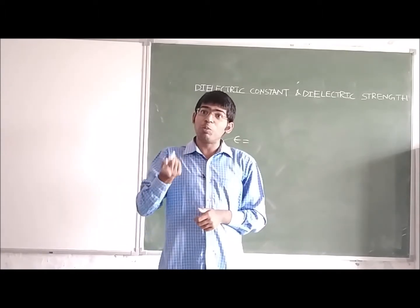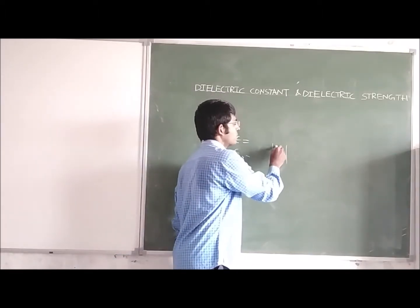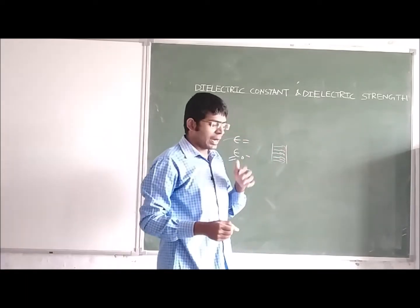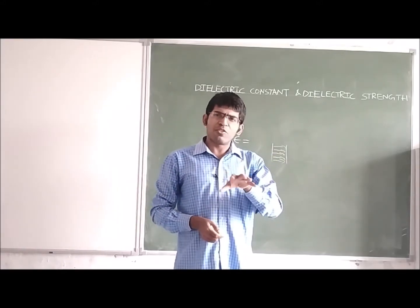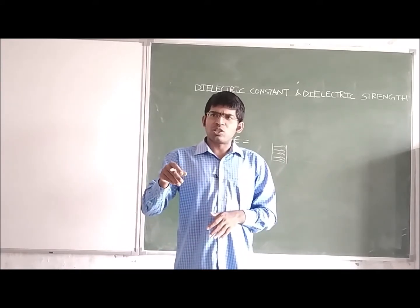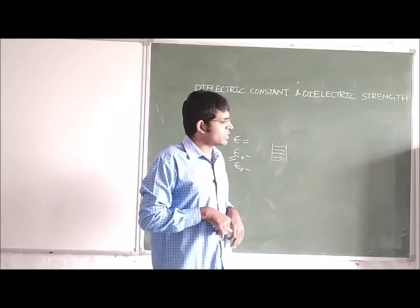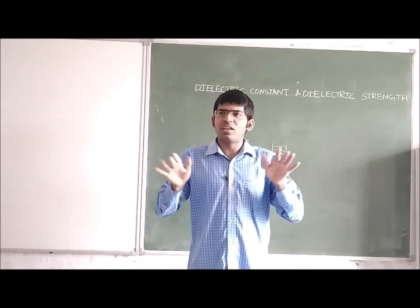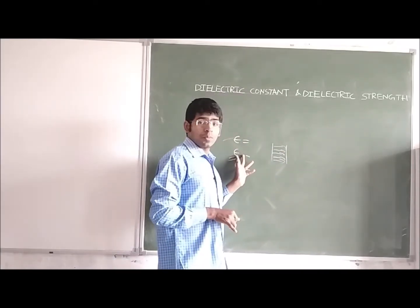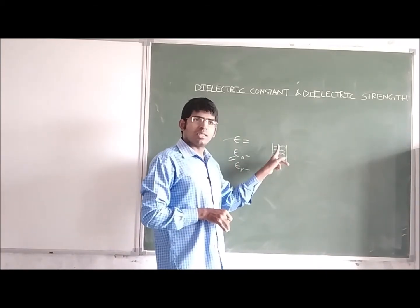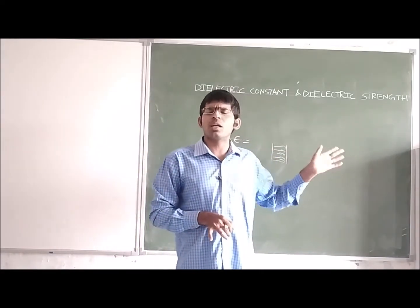Why are we bothering about epsilon naught and epsilon r? What is this epsilon r, relative permittivity, and why did it come? If you remember from previous classes, whenever we are measuring electric field lines, practically there is no instrument in our laboratory to measure them. Even if we want to, we would need sophisticated instruments. With our laboratory instruments like multimeters, we can only measure the voltage in a capacitor. The dielectric material we are using has a certain permittivity and can store electric field lines, but we do not know how many it is storing.